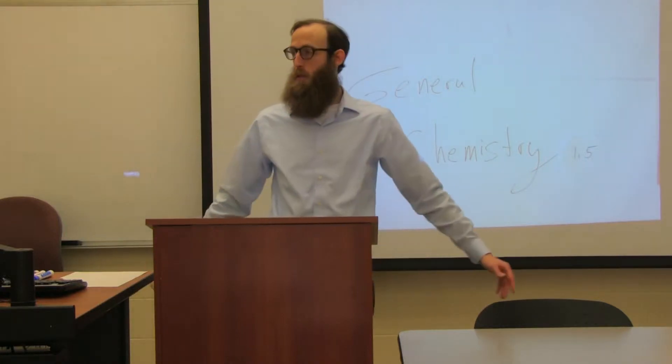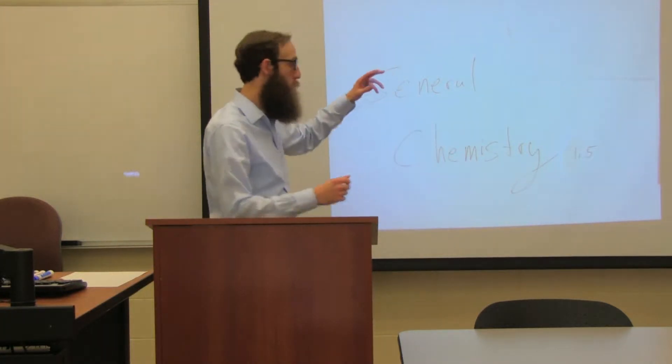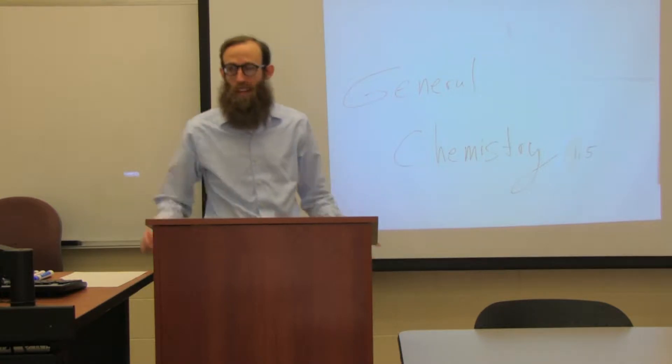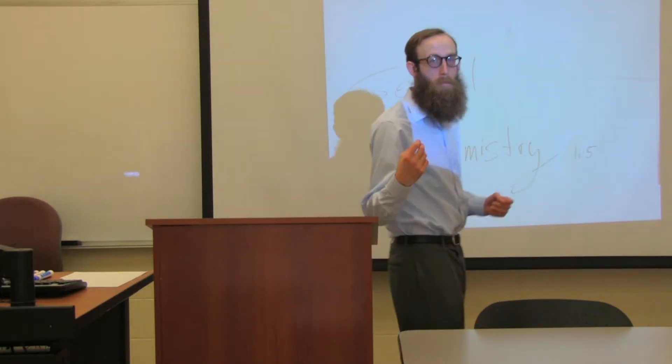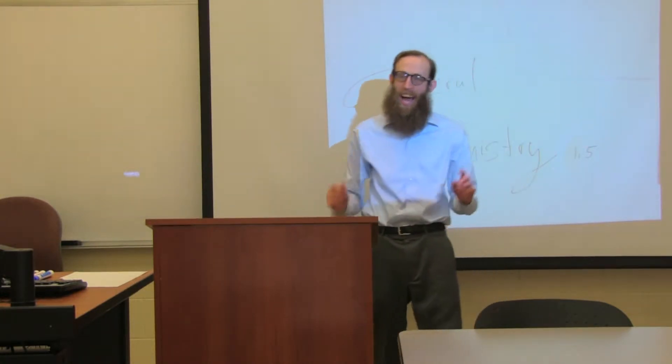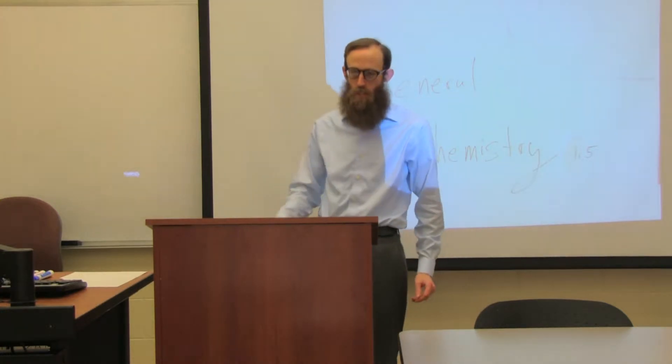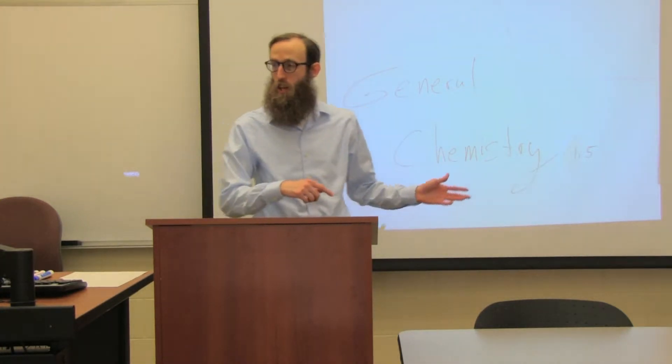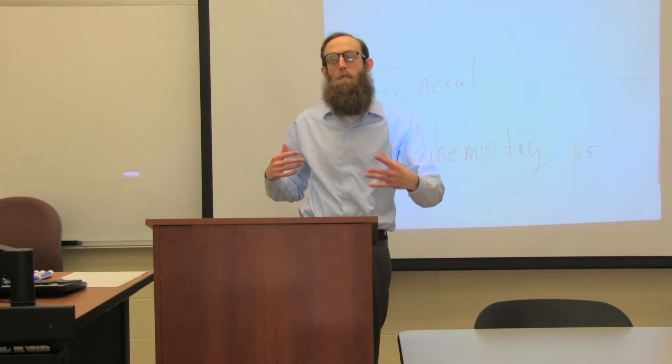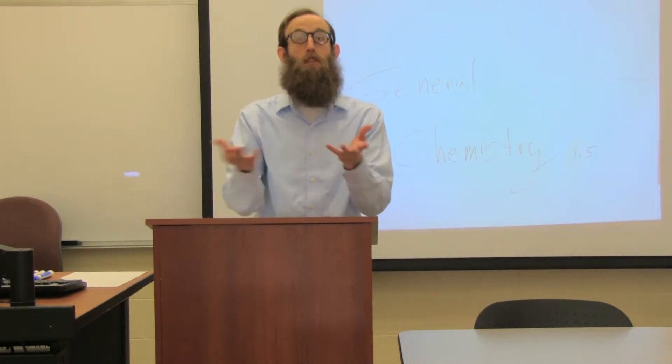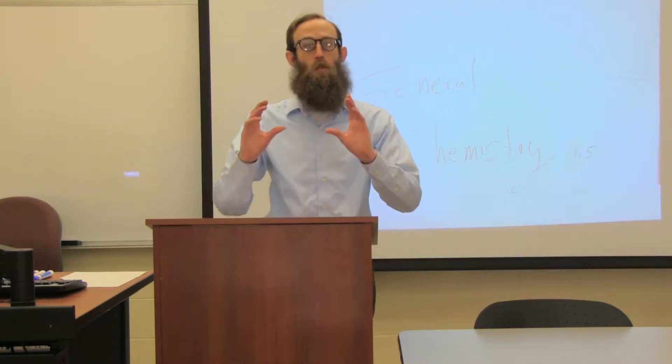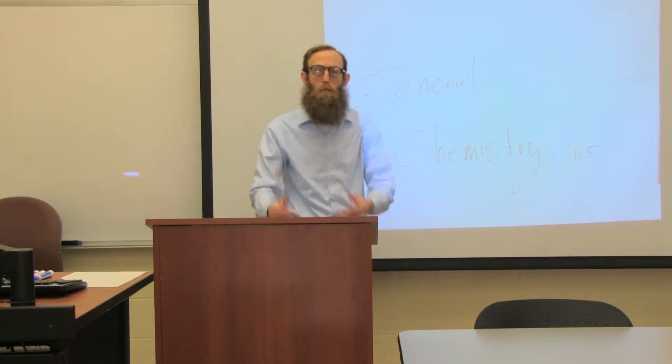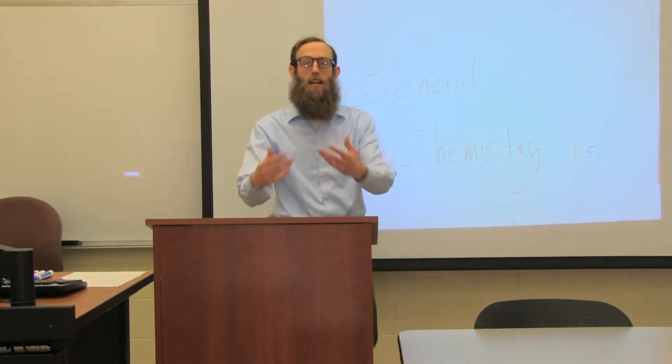Okay, welcome to General Chemistry section 1.5 of the OpenStax book. Today we're going to be talking about measurement uncertainty, accuracy, and precision. We just got finished talking about measurements having three pieces, right? You've got the actual magnitude, the number that is associated with it, but then that number has to represent something.